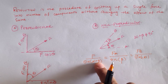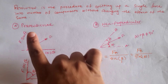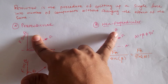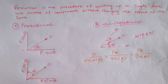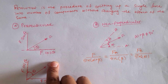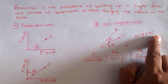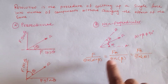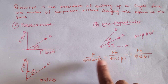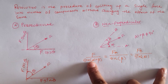For resolution along both perpendicular and non-perpendicular axes, we must focus on the angle and the force magnitude. If alpha plus beta does not equal 90 degrees, then it is non-perpendicular resolution and we use the sine rule equation as indicated.